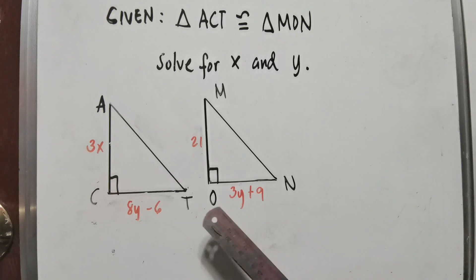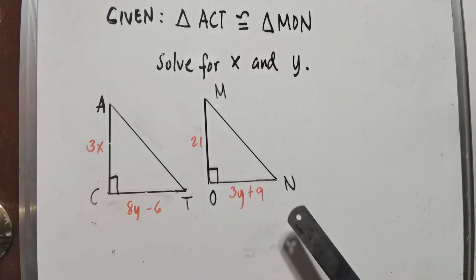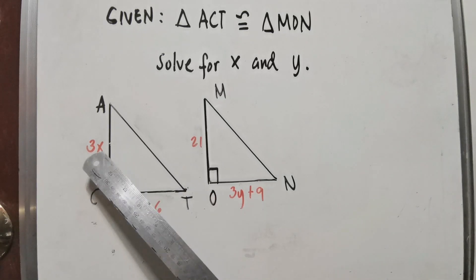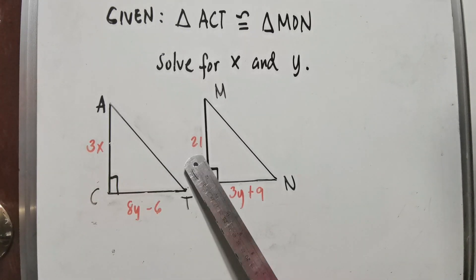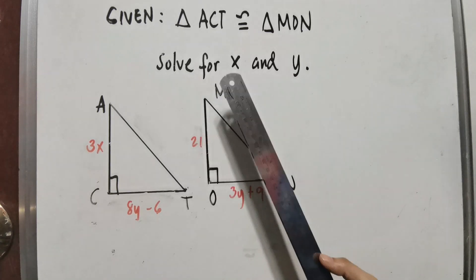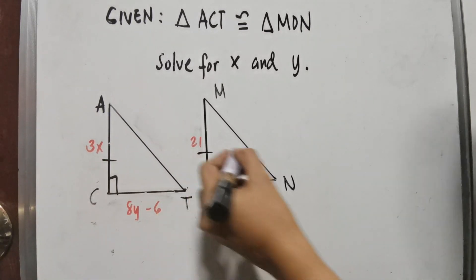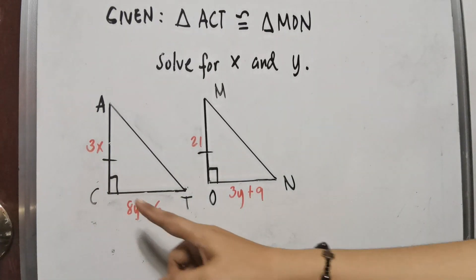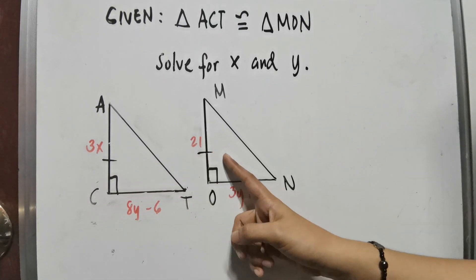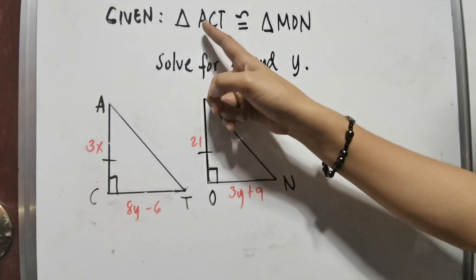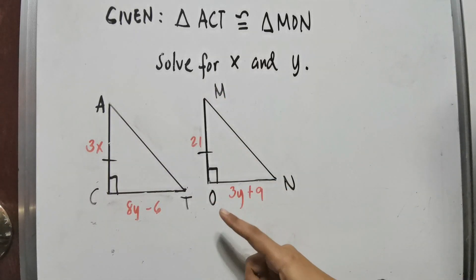Since they are congruent, ibig sabihin, their corresponding parts are also congruent. Given the measurement of the side which is 3X on one triangle and 21 on the other, we have to solve for the value of X. Let us mark the two corresponding parts which are congruent from the given — line segment AC is congruent to line segment MO.